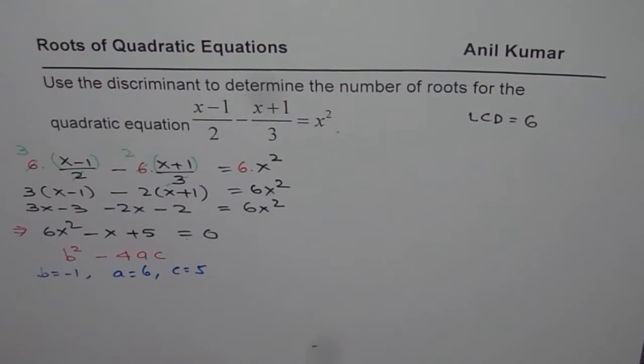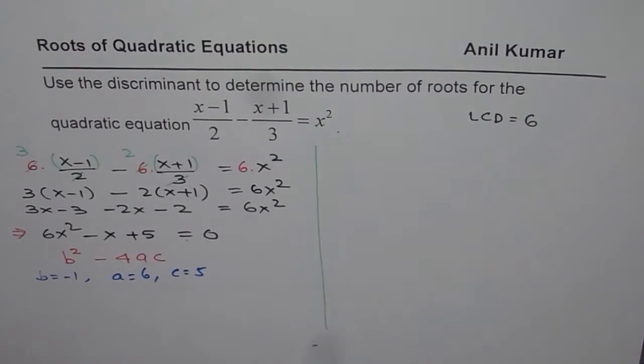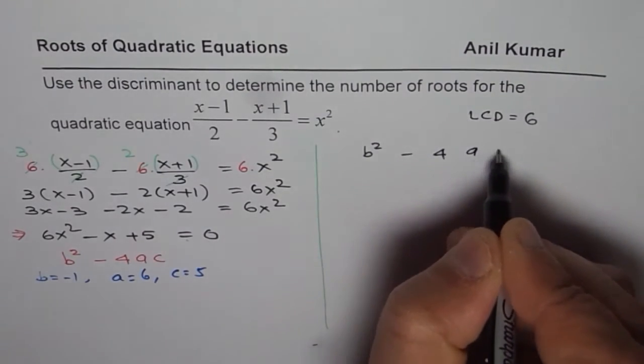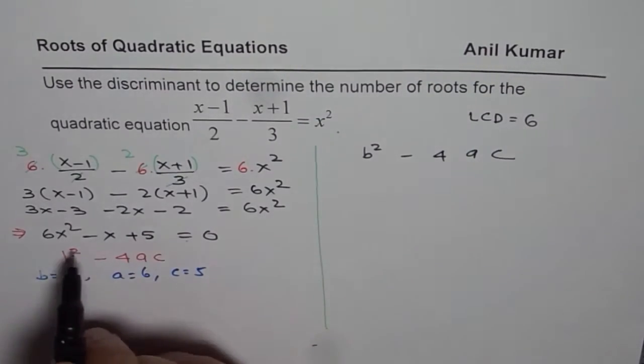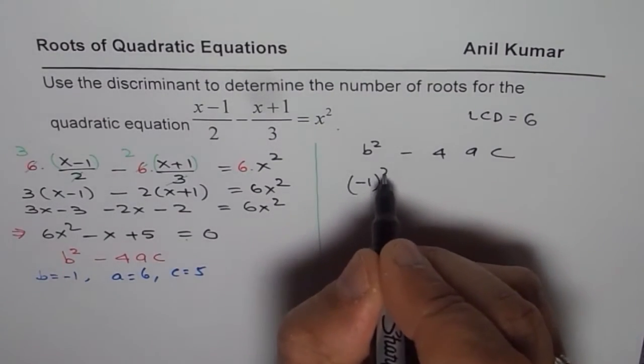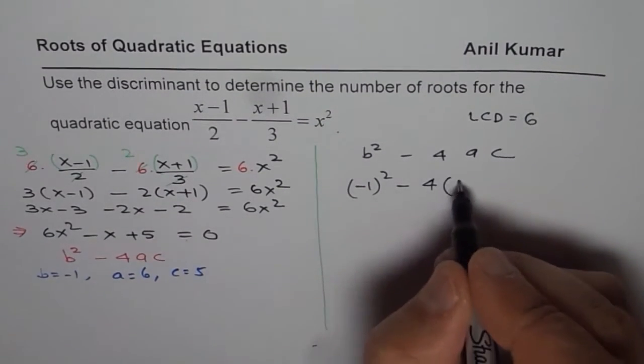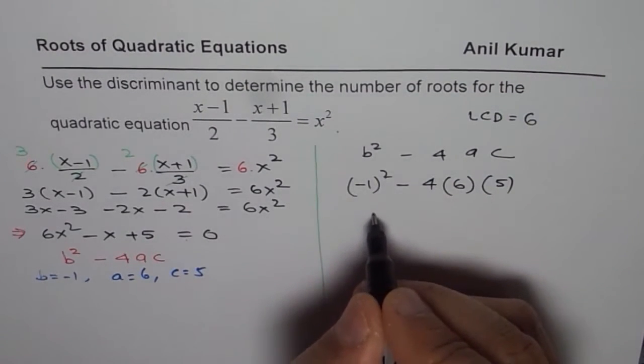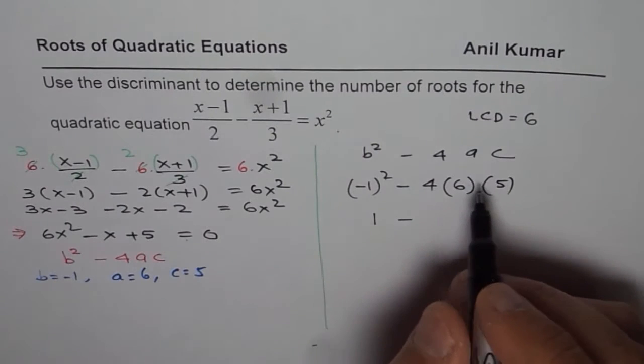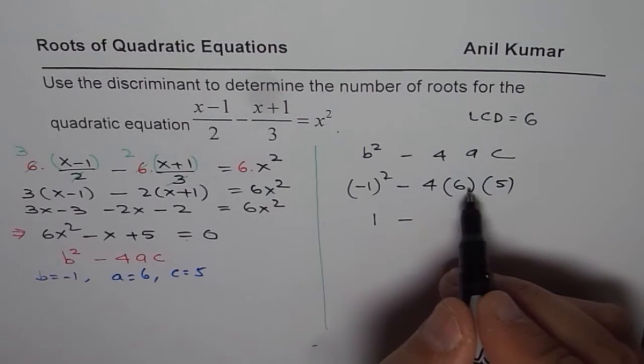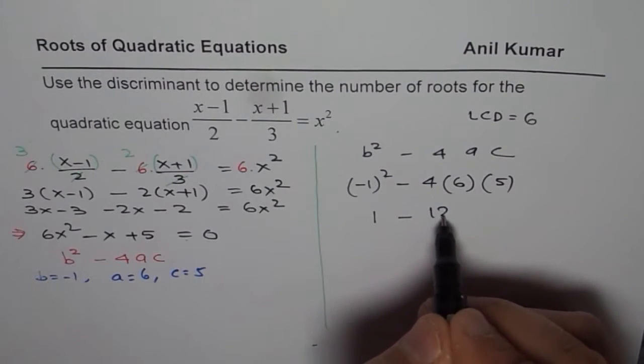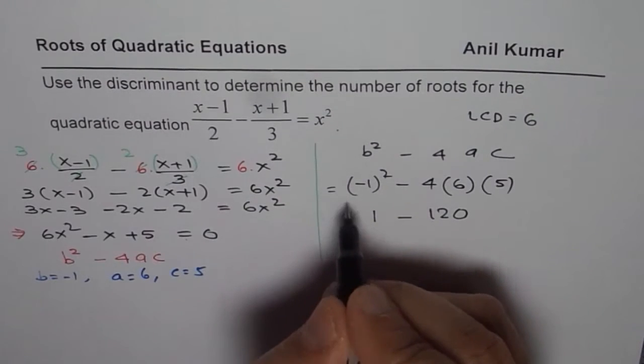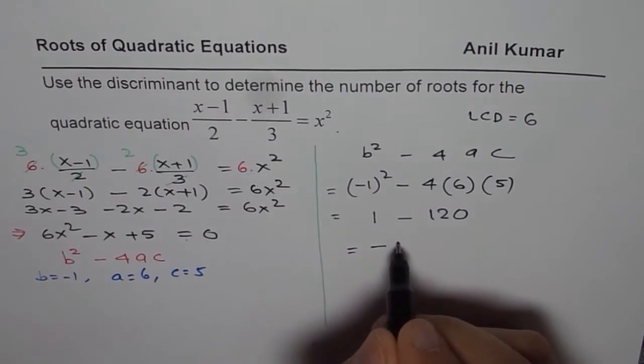So let's find what is the value of b squared minus 4ac. We have b squared minus 4ac. b is minus 1, so it is minus 1 squared, minus 4 times a is 6 and c is 5. So minus 1 squared is 1, minus 6 times 5 is 30, 30 times 4, 3 times 4 is 12, 120. So we get a negative value. So b squared minus 4ac for us is minus 119.